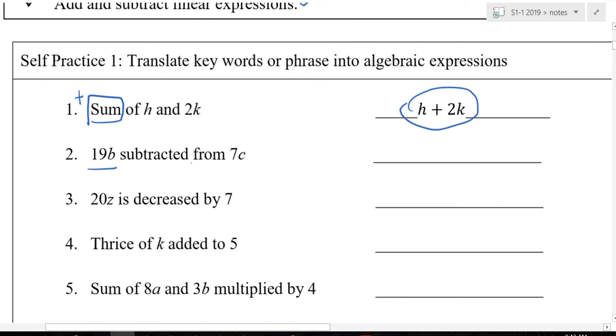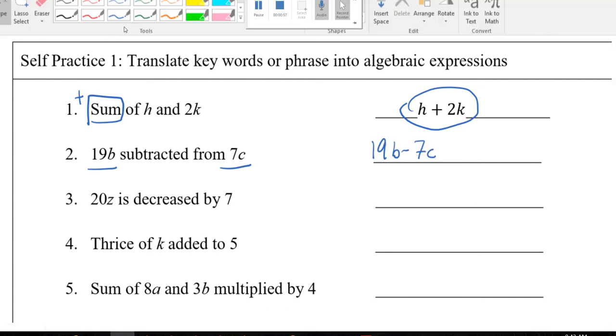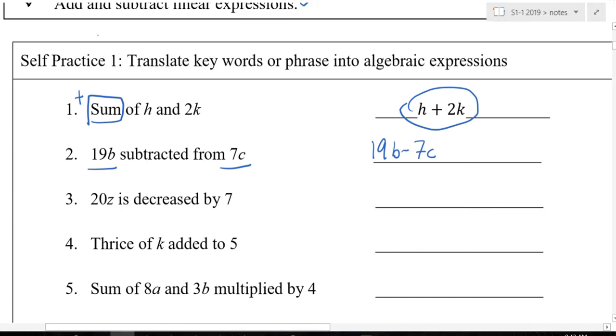Let's try now. This subtract from this. Darren, what's the answer? 19b minus 7c. Can you mark this wrong? Because it says from. So from should be what? It should be the other way around. 7c minus 19b. So every time I have the from something, then I will want to write this down.